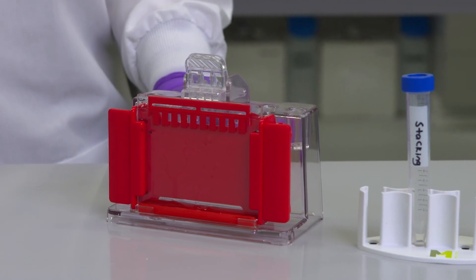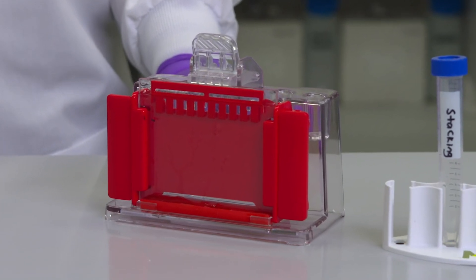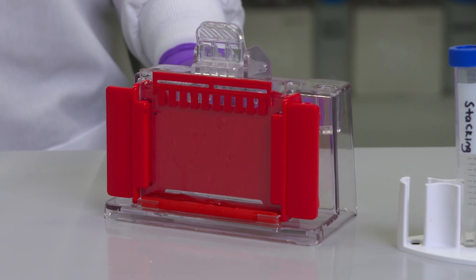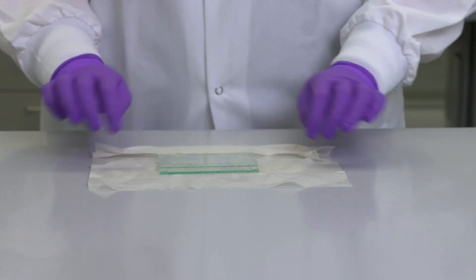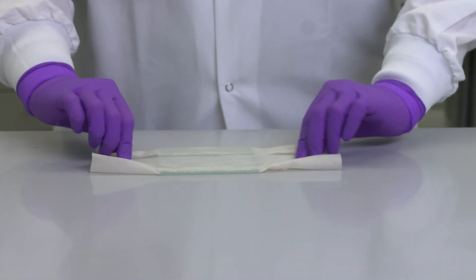Let the gel polymerize in the casting stand for one hour before using it or storing it for later use. Gels can be wrapped in wet paper towels and stored in a Ziploc bag at 4 degrees Celsius for up to 4 weeks.